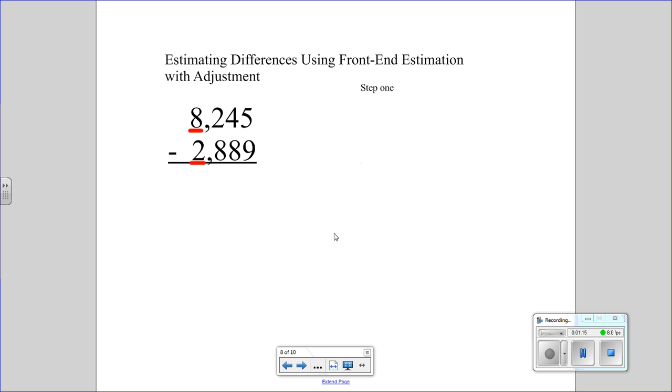So when you do subtraction, it's just very similar, except there's a little trick here I've got to show you. So we have our Front End Estimation on the thousands place as we did with the addition. But we have to subtract it, so it's going to be 6,000.